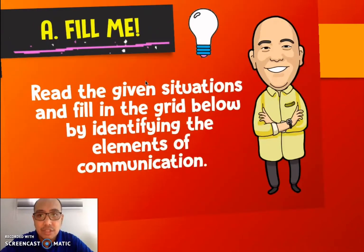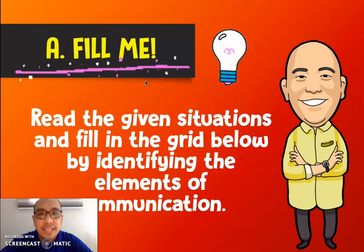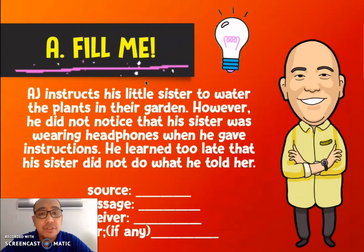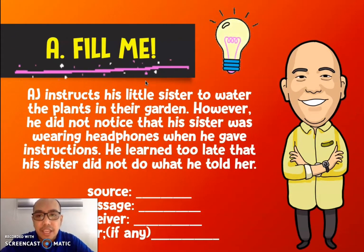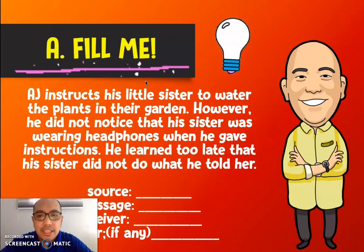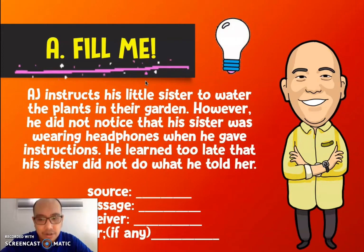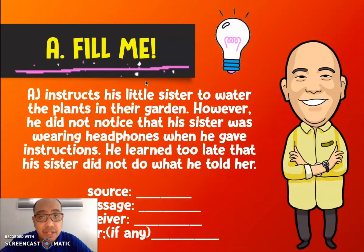Listen carefully for the instructions. Letter A, the first activity is entitled 'Filling.' Read the given situations and fill in the grid or the blanks below by identifying the elements of communication. First scenario: A.J. instructs his little sister to water the plants in their garden. However, he did not notice that his sister was wearing headphones when he gave instructions. He learned too late that his sister did not do what he told her. So, who is the source, what is the message, who is the receiver, and what is the barrier, if there is any.